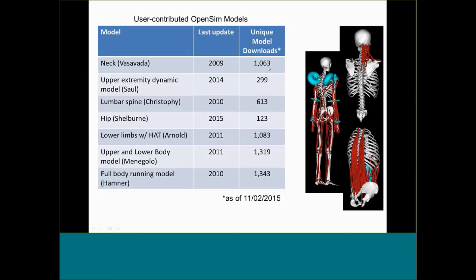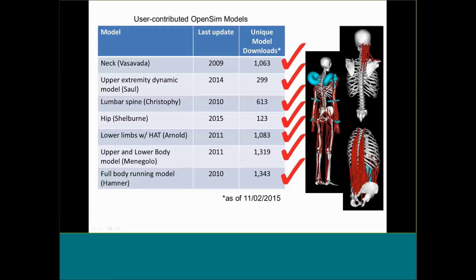One great thing about OpenSim is the active user community and the variety of models available. Among the most downloaded user-contributed models — with hundreds or even over a thousand unique downloads — all of them include the thoracolumbar trunk in some way. However, a closer look reveals a common assumption among these models: the thorax is treated as a single rigid body. Even in the lumbar spine model, where lumbar vertebrae are separate bodies, the entire thorax is considered rigid.